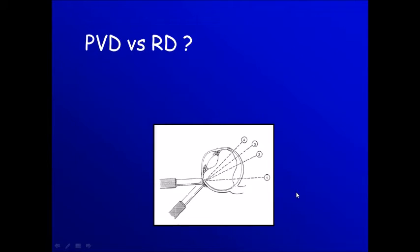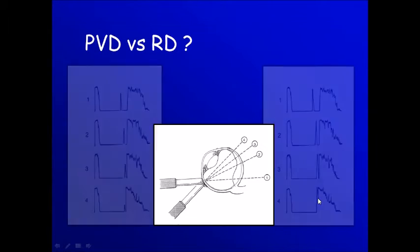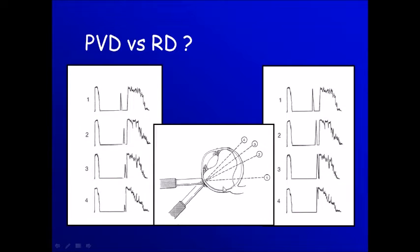One important thing: if you have a membrane attached to the disc and you are not sure whether it is a retinal detachment or a posterior vitreous detachment, you make different sections starting toward the disc and gradually make more sections toward the ora serrata. If it's a retina, the retina is always thick and the amplitude of this membrane is quite high, similar to the wall. While in case of posterior vitreous detachment, in the central part the peak is high and gradually as we go toward the vitreous base the peak is less.